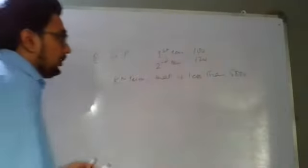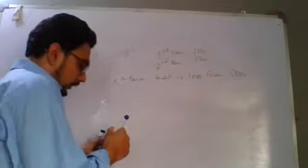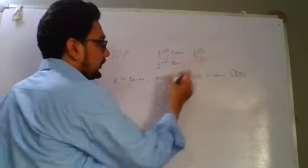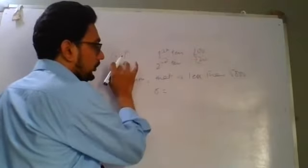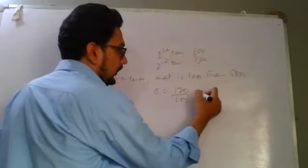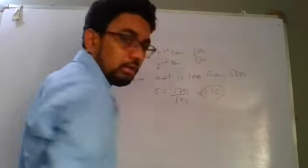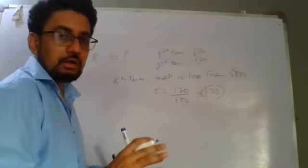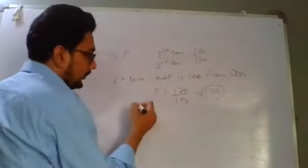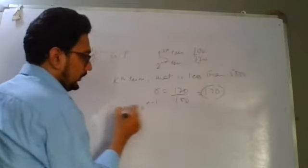So how we will be solving this? First of all, the first term is 100. Second term is 120. So R, if it's a geometric progression, you will be finding R. R is 120 divided by 100. That is coming 1.2. So this is the R. Now what do you have to find? You have to find the K term that is less than 5000. So the series is AN equals A, R to the power N minus 1.